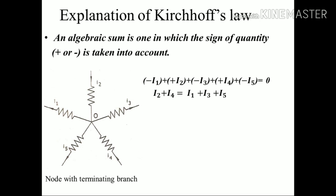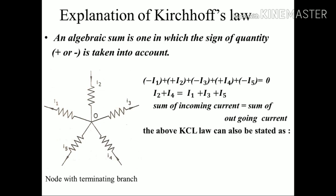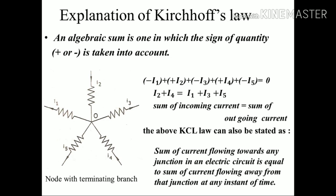So we can write that the sum of incoming current equals the sum of outgoing current. So our statement can also be written as: the sum of current flowing towards any junction in an electric circuit is equal to the sum of electric current flowing away from the junction at any instant of time. This is our second statement of KCL law.